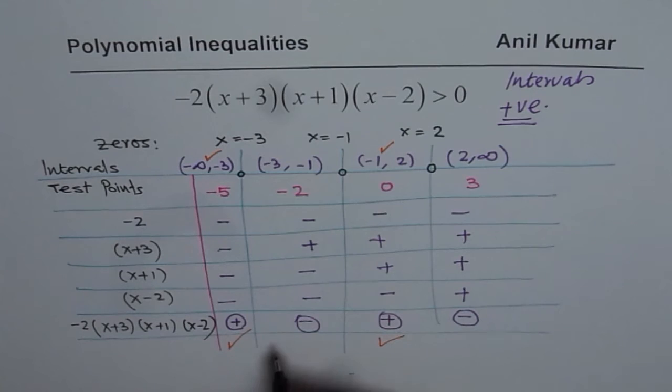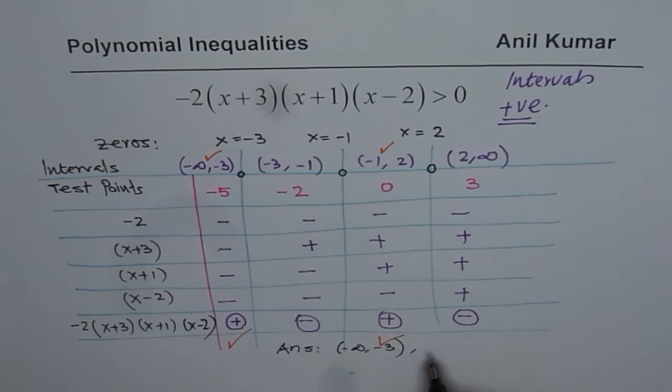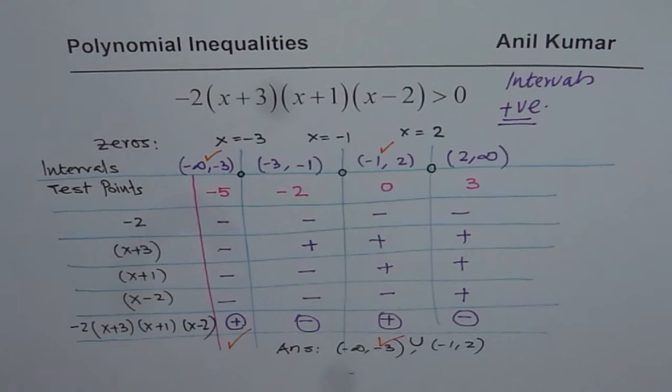We can write down our answer as minus infinity to minus 3 and from minus 1 to 2. At times we prefer to write union sign also. That becomes the solution for the given question.